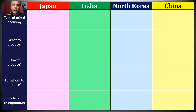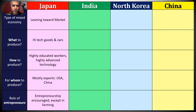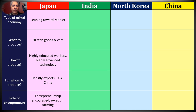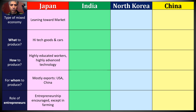Let's start with Japan. Japan has a mixed economy, but it's clearly leaning heavily toward the market side — around 73% economic freedom. Their main products include high-tech goods, cars, and aircraft. How they produce: Japan has an extremely well-educated workforce and highly advanced factory technology. Japan is one of the most automated economies in the world. They've had to rely on this workforce because they're not a country with a lot of natural resources.